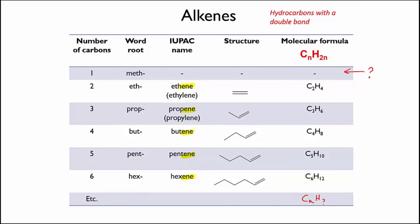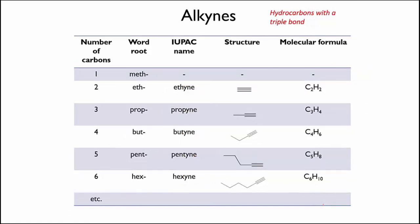So we've looked at the alkanes and the alkenes. Finally, for this video, we'll look at the alkynes. If the hydrocarbon molecule has a triple bond, it's known as an alkyne. Again, it's the suffix in the name — the end part — that tells you what kind of molecule you're dealing with, while the prefix tells you how many carbons there are. Can you see what the formula would be for an alkyne with N carbons?